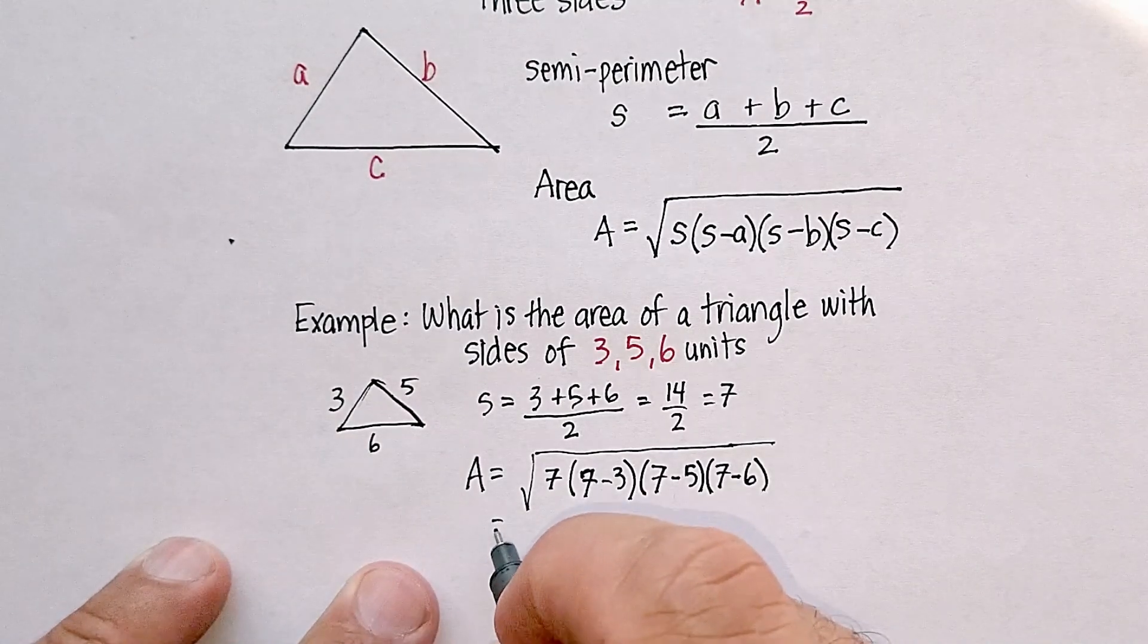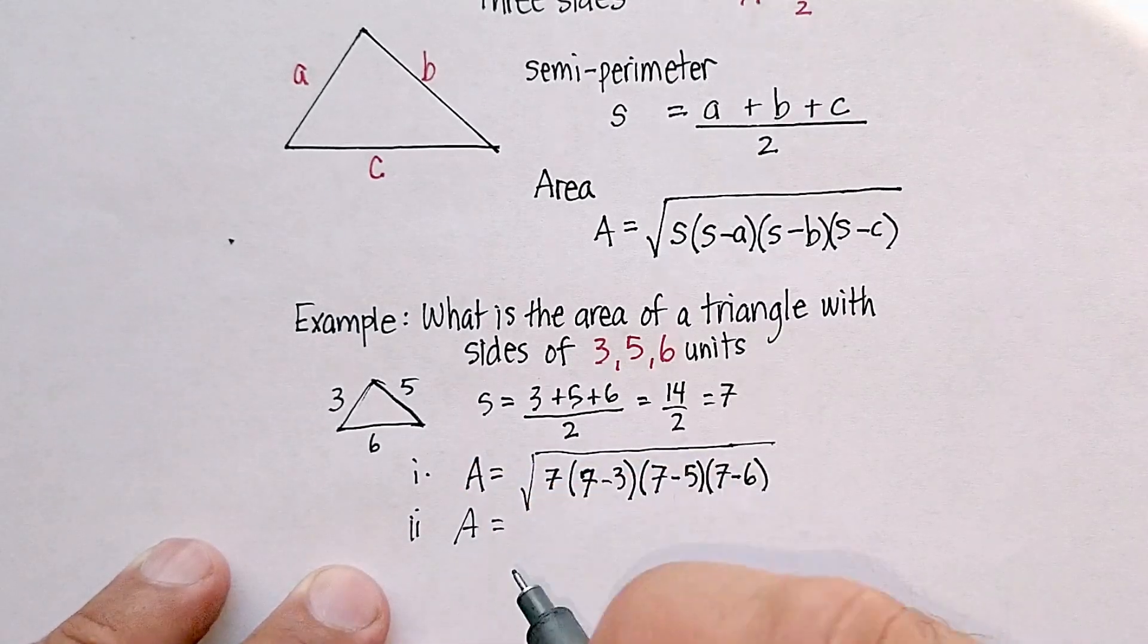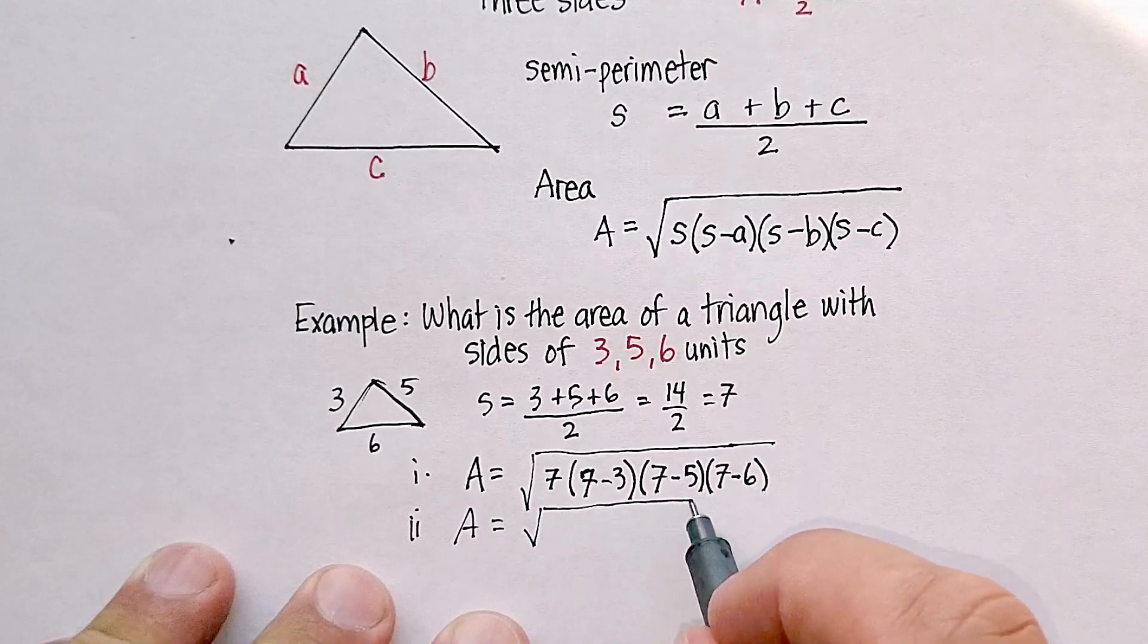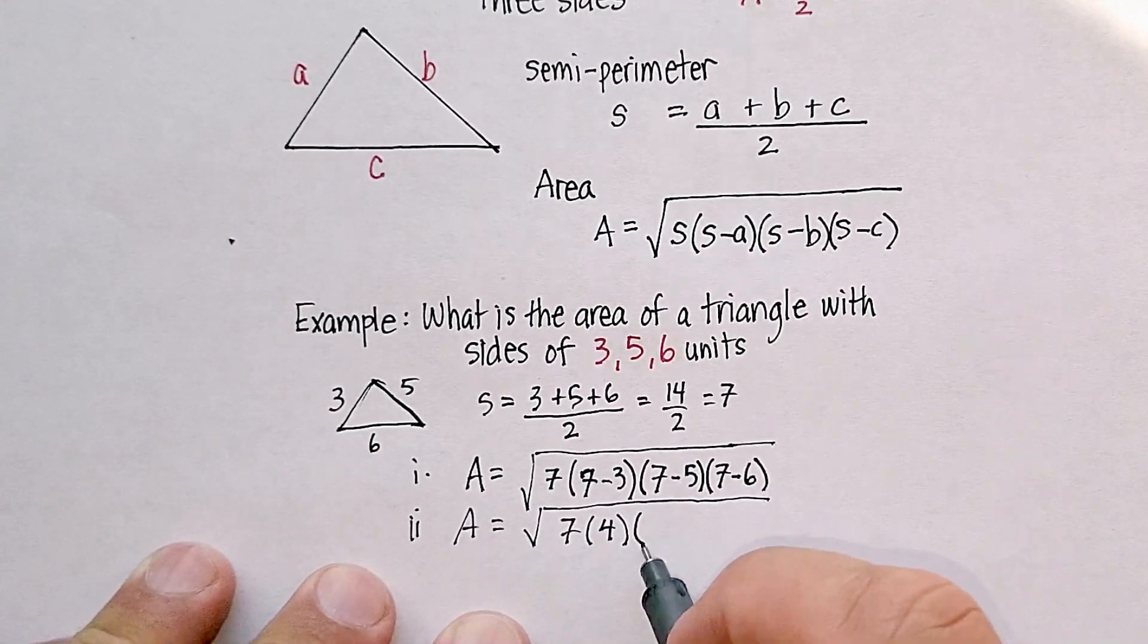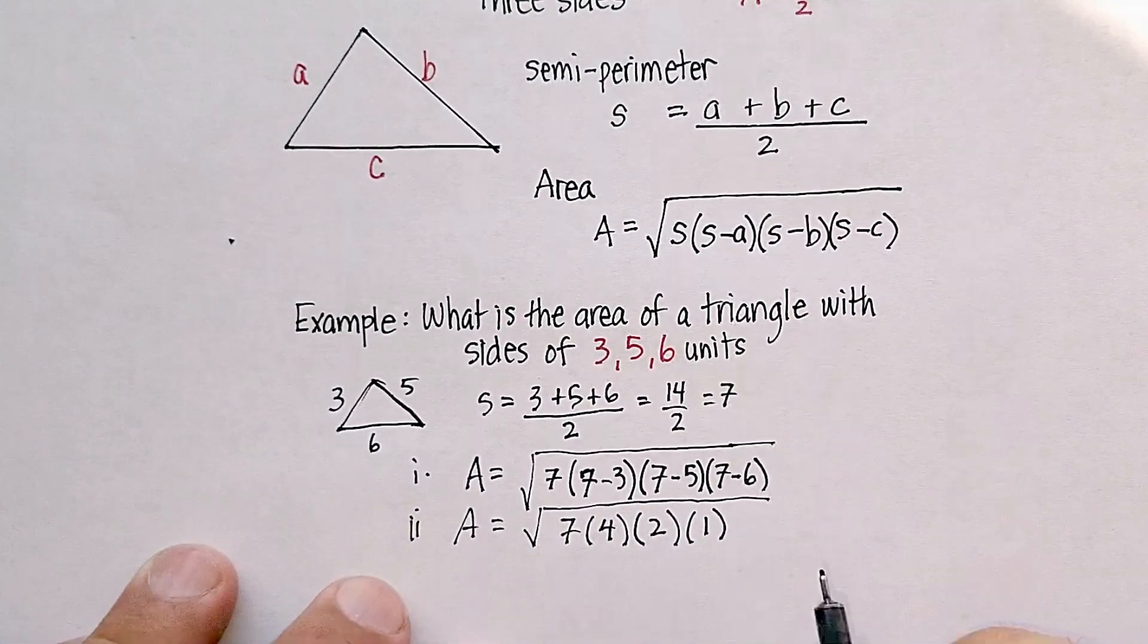Let's continue. There's my step 1, there's my step 2. This is going to give me the square root of 7 times 4, times 2, times 1, which is pretty helpful.